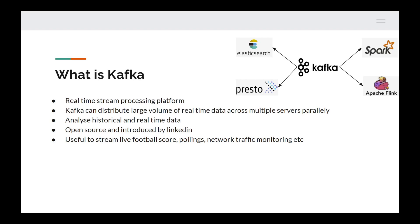Kafka can analyze both historical and real-time data. It has a default seven-day retention period, during which we can analyze the data. After seven days, the data will be destroyed or wiped out. For real-time data, we can visualize or analyze the data through external sources like Elasticsearch, Kibana, RustroDB, etc.